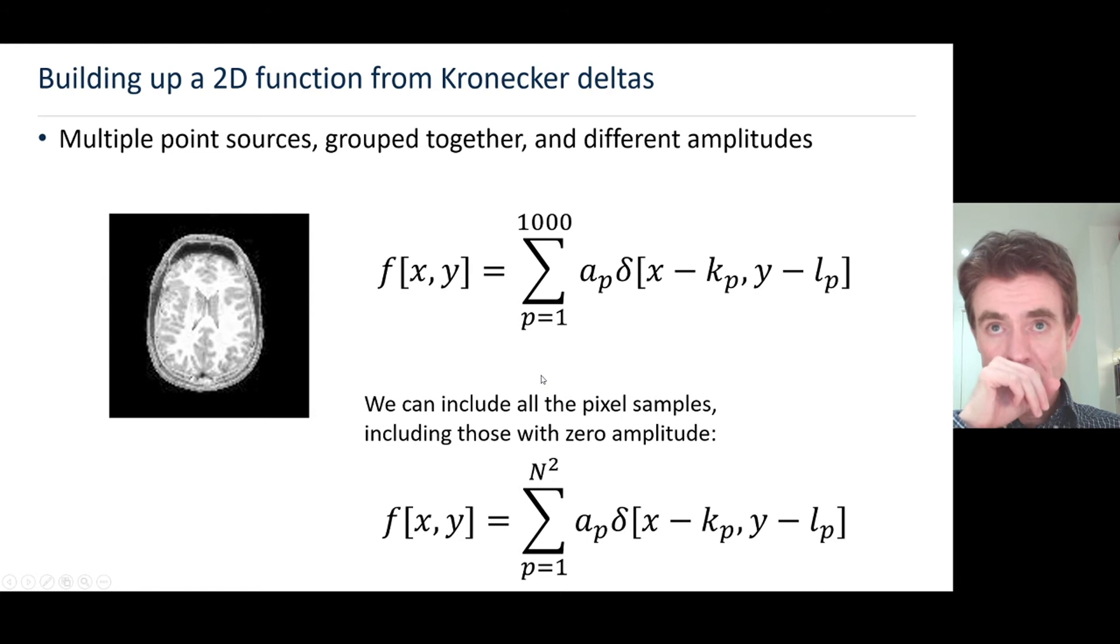I was just guessing about the number of point sources. In general, if we've got an N by N image, N pixels in y, N pixels in x, then we would have N² such point sources and we would do exactly the same process.